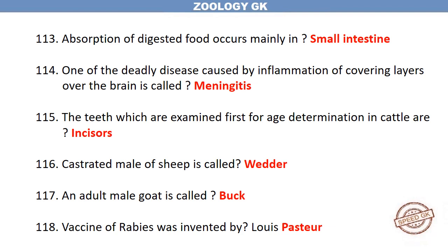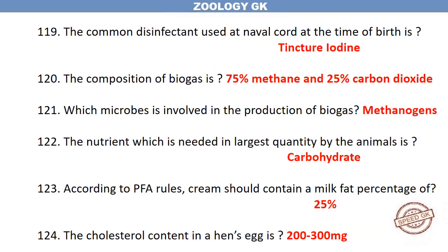One of the deadly diseases caused by inflammation of the covering layers over the brain is called meningitis. The teeth which are examined first for age determination in cattle are incisors. A castrated male sheep is called a wedder. An adult male goat is called a buck. The vaccine for rabies was invented by Louis Pasteur. The common disinfectant used at the navel cord at the time of birth is tincture iodine.